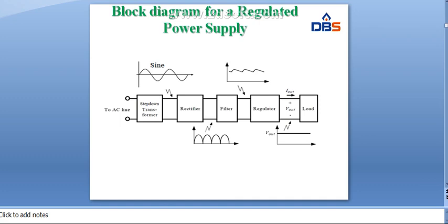First, the AC signal is applied to the step-down transformer. Then it is given to the rectifier section, where it converts AC to pulsating DC signal. The pulsating DC signal is applied to the filter section, where we minimize the AC components. Finally, it is applied to the regulator section, and after the regulator, we get the pure DC signal.